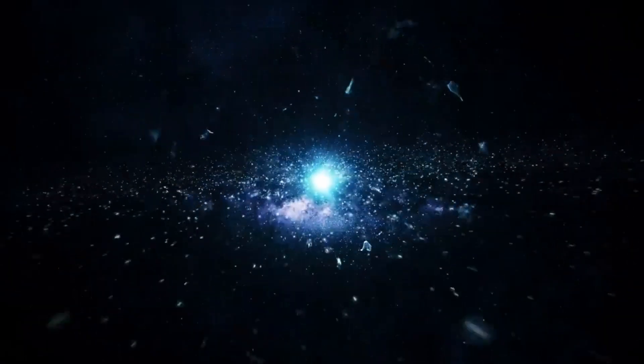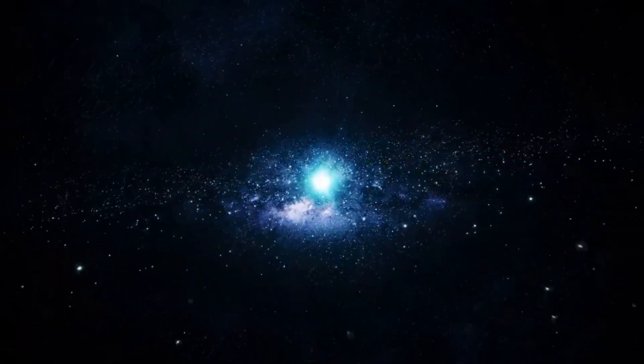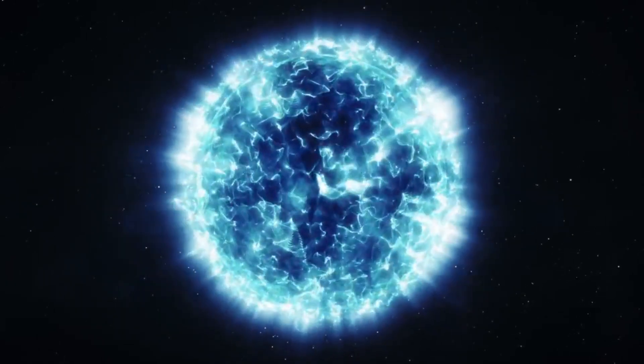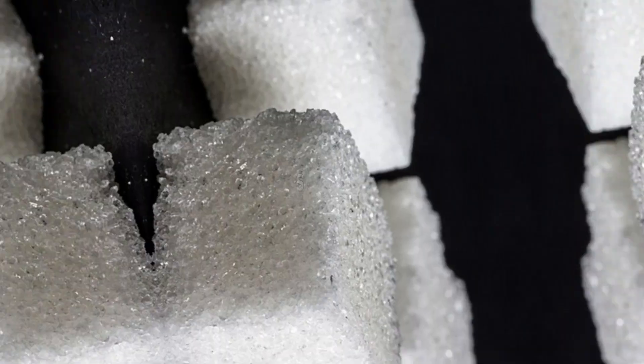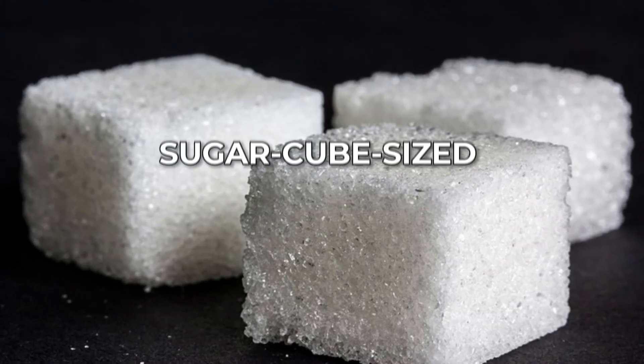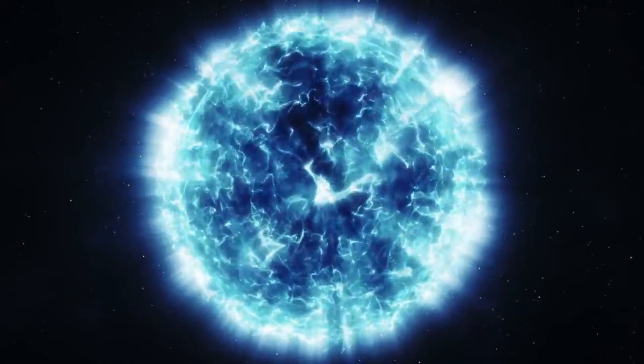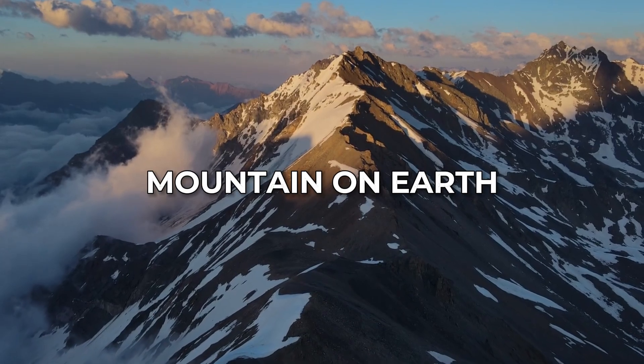Now, the star's material is crammed together so tightly that there's hardly any space between its neutrons. Imagine this: a sugar cube-sized piece of neutron star would weigh as much as a mountain on Earth.